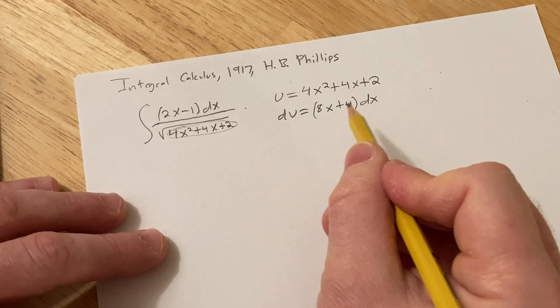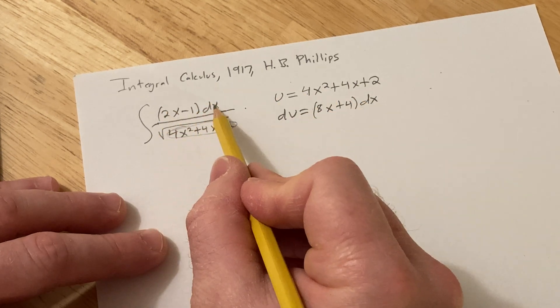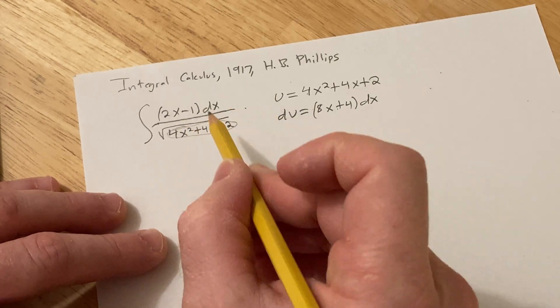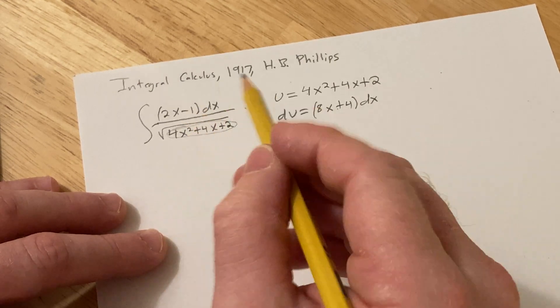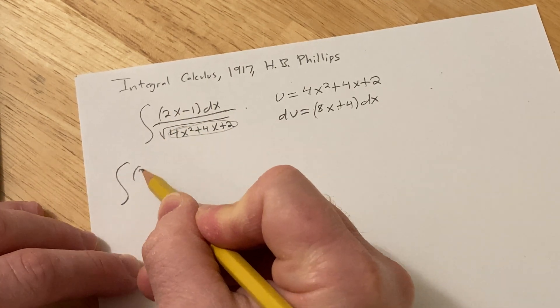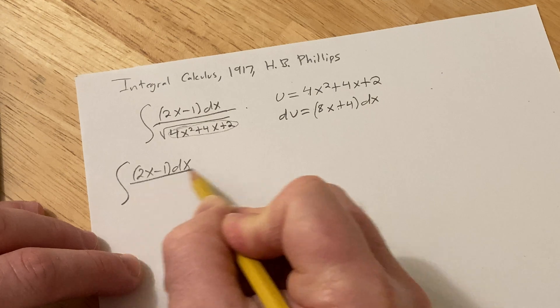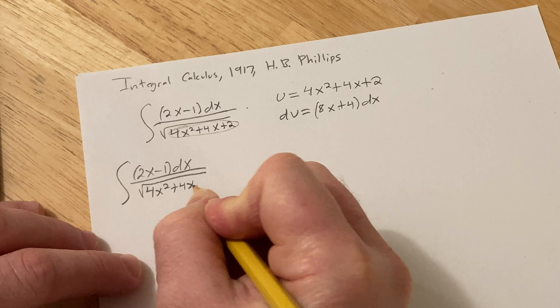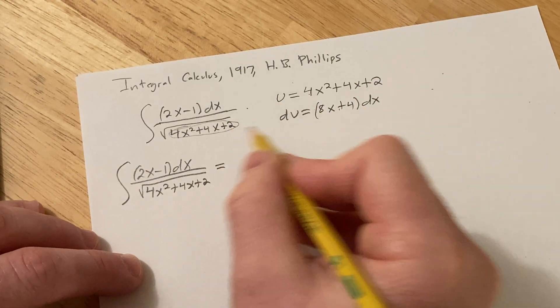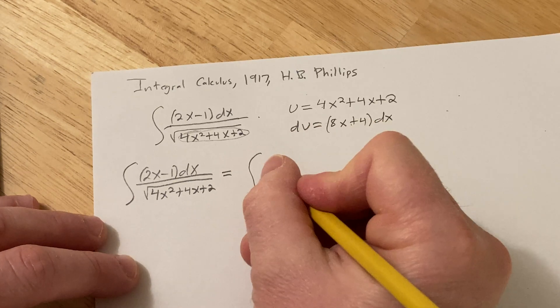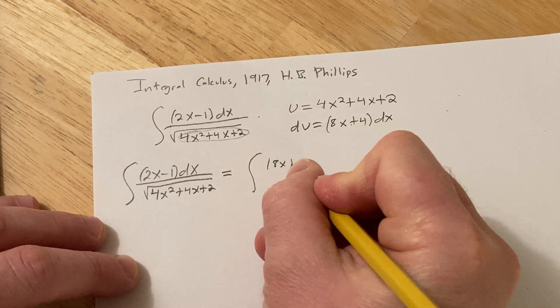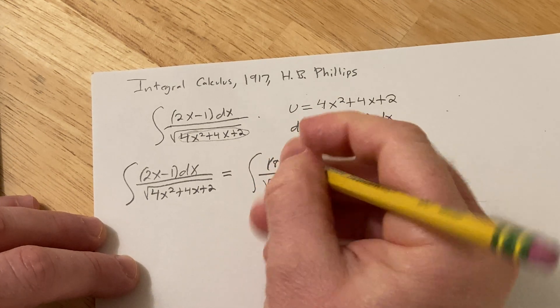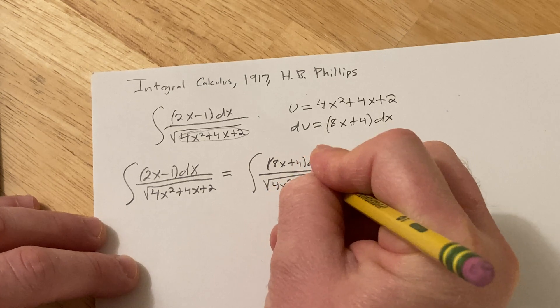This means something really important. If instead of 2x - 1 dx we had this (8x + 4 dx), we could work this out because it would be du over the square root of u and would be a very easy integral. So I'm going to write the original integral again and the square root of (4x² + 4x + 2). Basically, I'm just going to put this here because that's what I want. You write down what you want and you fix it later. This is a reoccurring idea.